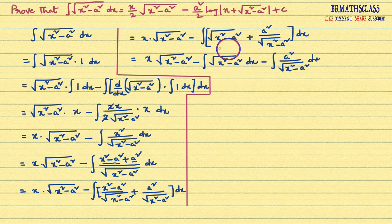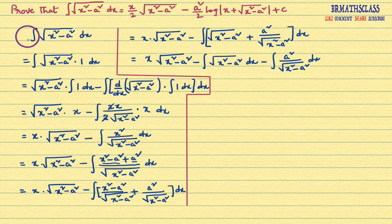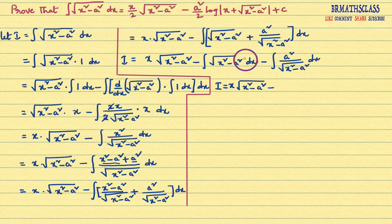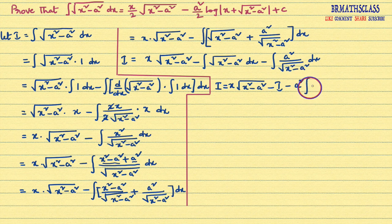Now observe: integral of root over x square minus a square dx is the same integral I started with. I let I equal to this integral, so this expression is also I. We get: I equals x into root over x square minus a square minus I, minus a square — since a square is constant, take it outside — a square into integral of 1 divided by root over x square minus a square dx.